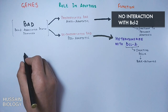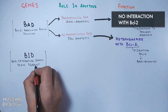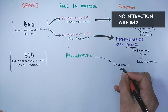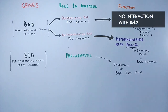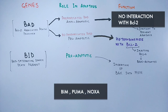Then we have the BID gene — BH3 interacting domain death agonist. This is also a pro-apoptotic gene. Its function is to insert BAK into the mitochondrial outer membrane, forming oligomeric pores through which cytochrome c is released, thus initiating apoptosis. Furthermore, several other pro-apoptotic genes regulate apoptosis, including BIM, PUMA, and NOXA.